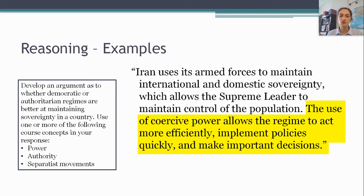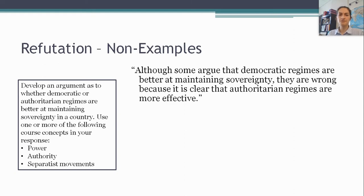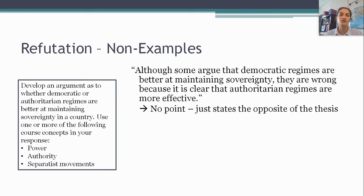The last thing you need to do — and the weirdest thing, this is a weird way to write — is refutation or response to some kind of alternative perspective. A couple of non-examples first. Let's say I've argued that authoritarian regimes are better, and my refutation paragraph reads: 'Although some argue that democratic regimes are better at maintaining sovereignty, they are wrong because it is clear that authoritarian regimes are more effective.' This is nowhere near enough. It just takes your thesis, flips it on its head, and adds a five-year-old's 'no, I'm right, you're wrong' without any additional reason. Don't do that.